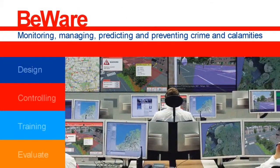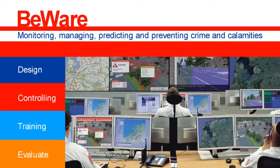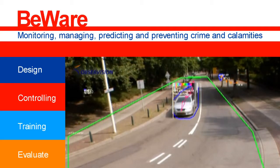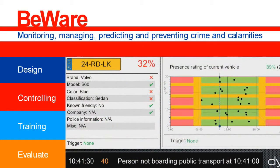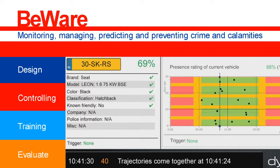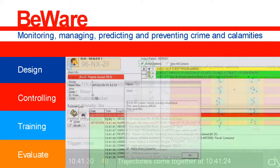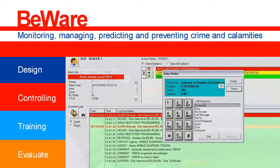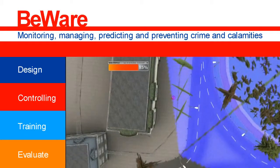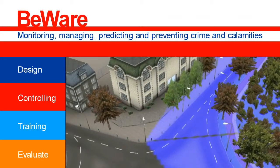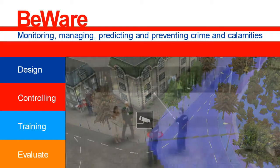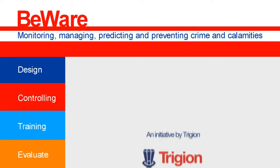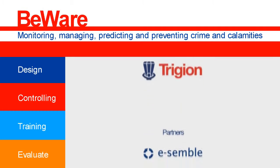Beware combines broad experience in security management with innovations in different technologies. Beware's intelligent sensors enable fast object recognition and classification. Beware's powerful environment for analysis and correlations enables real-time dynamic threat analysis. Beware's innovative control room setting provides the operator with an optimal workbench. Beware's 3D virtual reality environment provides a very attractive user interface, including full situational awareness, as well as a virtual reality training and designing tool. Beware is an initiative of Trigion, the Netherlands' largest security management organization.